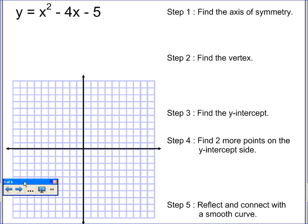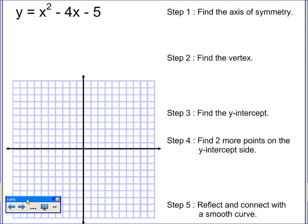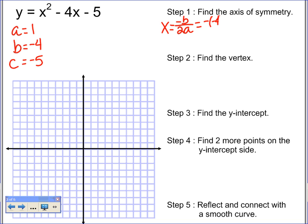Now I'm going to show you how we're going to graph. Here's my function: y equals x squared minus 4x minus 5. My first step is to find the axis of symmetry. a equals 1, b equals negative 4, and c equals negative 5. The axis of symmetry formula is x equals negative b over 2a. Plugging in: negative of negative 4 over 2 times 1 gives me 4 over 2, which is 2. So my axis of symmetry is x equals 2, and I plot that vertical line.